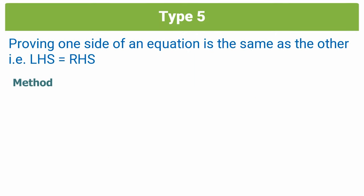So what's our method? Step one is going to be to identify the more complex side of the equation, because that's the side you're going to want to work with. If you start off with the simpler side, it's going to be quite hard to take something simple and make it look complex. It's much easier to simplify something more complex, something that has more terms, and make that simpler.